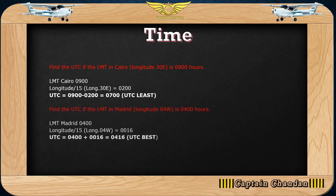Second example: find UTC. LMT is 0400 hours, longitude of Madrid is 04 degrees West. Convert longitude arc to time: 04 divided by 15 gives 0016 hours. Since longitude is West — UTC best — UTC will be greater than LMT. So UTC = 0400 plus 0016, giving UTC = 0416 hours.